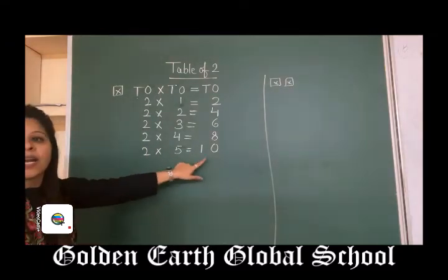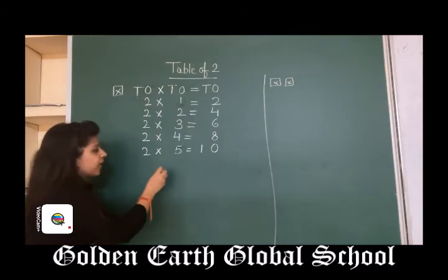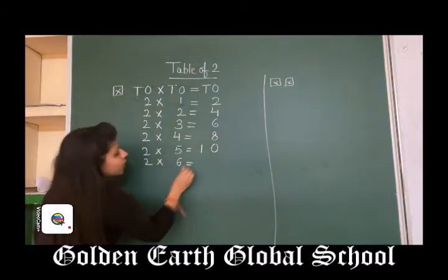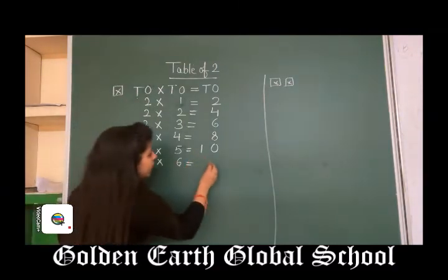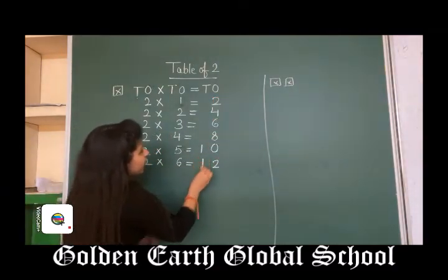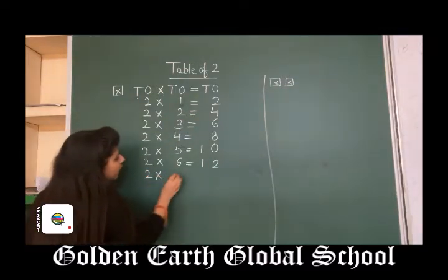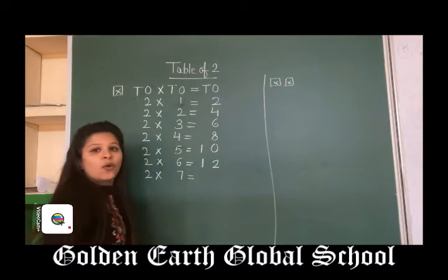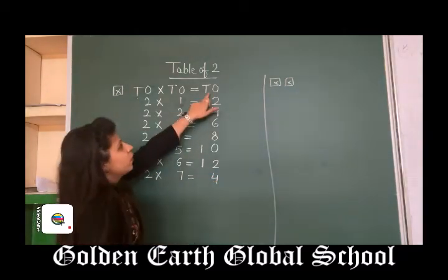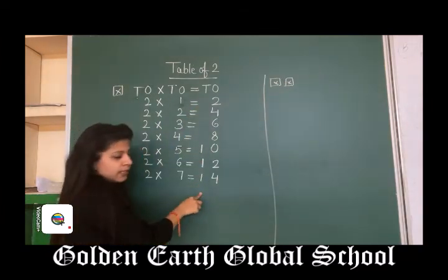2, 5s are 10. What comes after 5? 6. 2, 6s are 12. Write down 2 under 1s and 1 under 10s. 2, 7s are 14. Write down 4 under 1s and 1 under 10s.